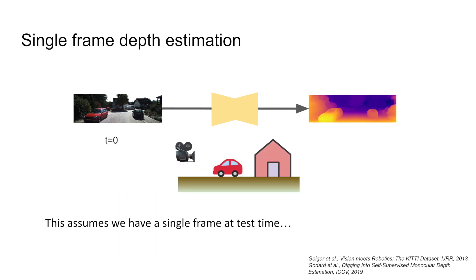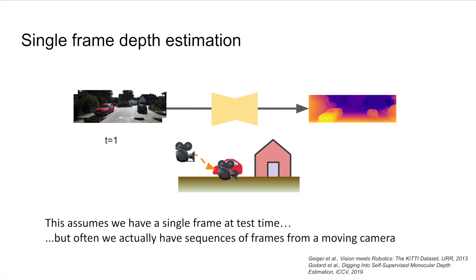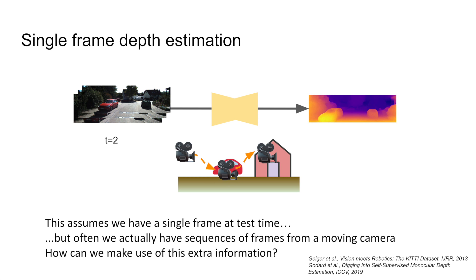Traditional deep-network-based monocular depth estimation approaches only make use of one frame at test time, but often we actually have sequences of frames coming from a moving camera. So, how can we make use of this extra information?